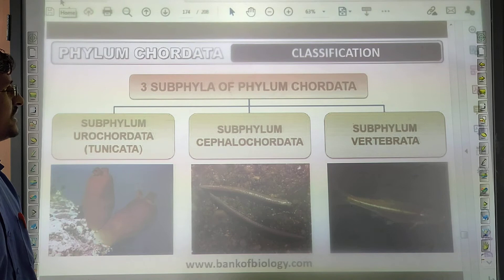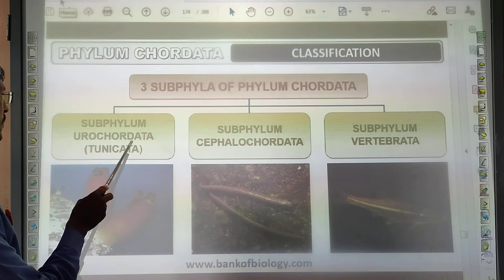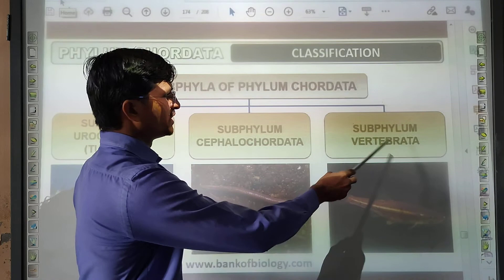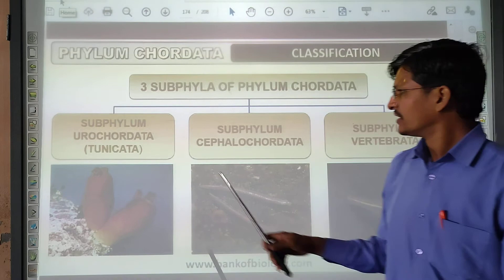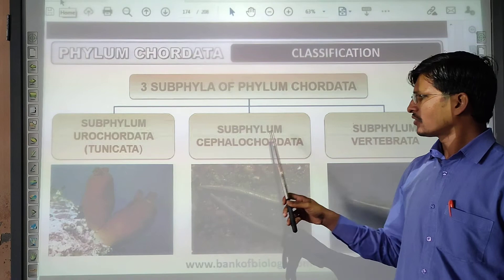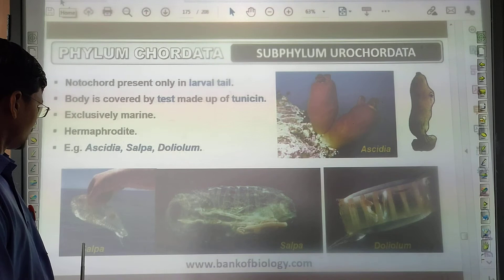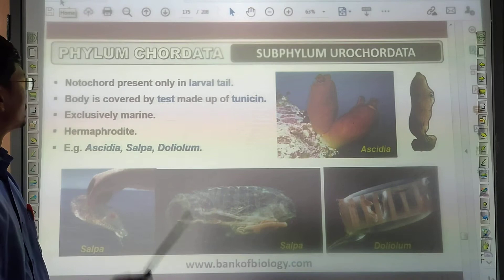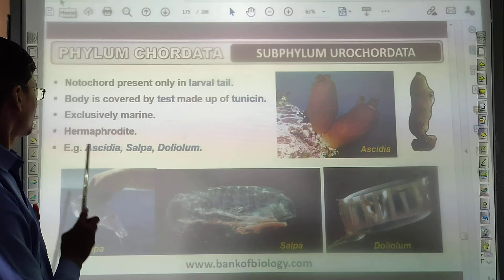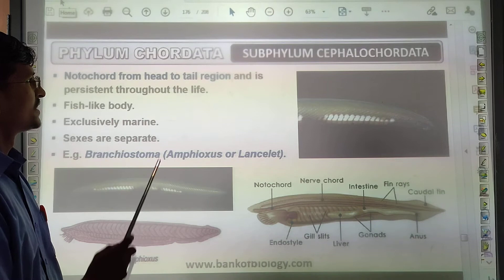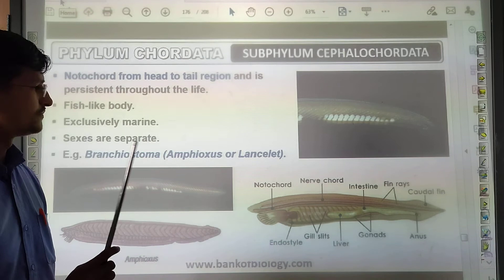Classification of Chordata into sub-phyla: Urochordata, Cephalochordata, and Vertebrata. In Urochordata, the notochord is present only in the larva stage. In Cephalochordata, the notochord extends from head to tail and is small. Sexes are separate. Vertebrata: in this group, humans are included. They possess a notochord during the embryonic period, which is later replaced by a cartilaginous or bony vertebral column.